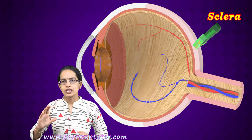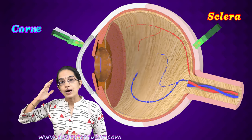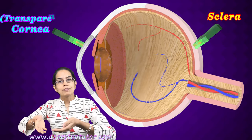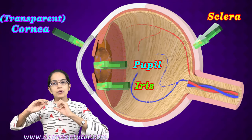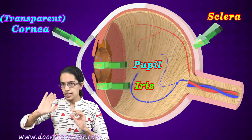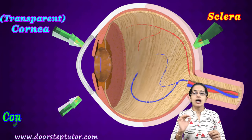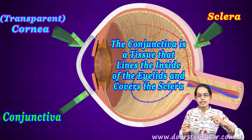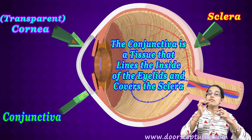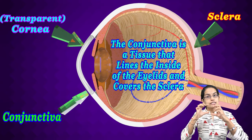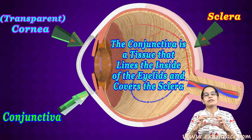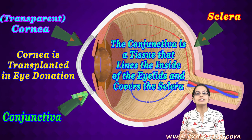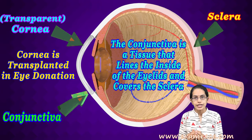Cornea is part of the sclera itself, but it is transparent. Behind the cornea, we have the pupil and the iris on the lens. Conjunctiva is a very thin layer present inside the eyelids, and it is a kind of continuous layer with the corneal epithelium. Cornea is indeed important because in most cases of eye donation, what is basically transplanted is the cornea.